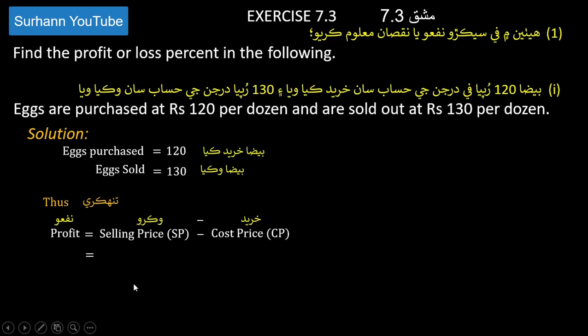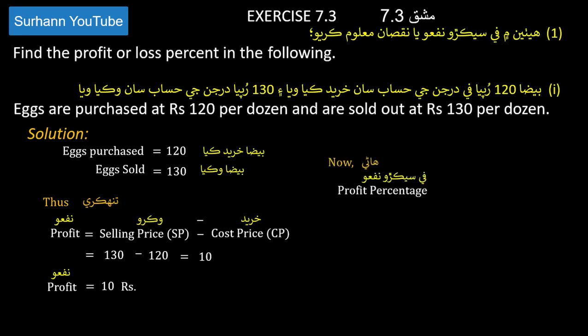There is a profit of 10 rupees. To find the profit percentage, we use the formula: profit divided by cost price, multiplied by 100. The profit is 10 rupees.